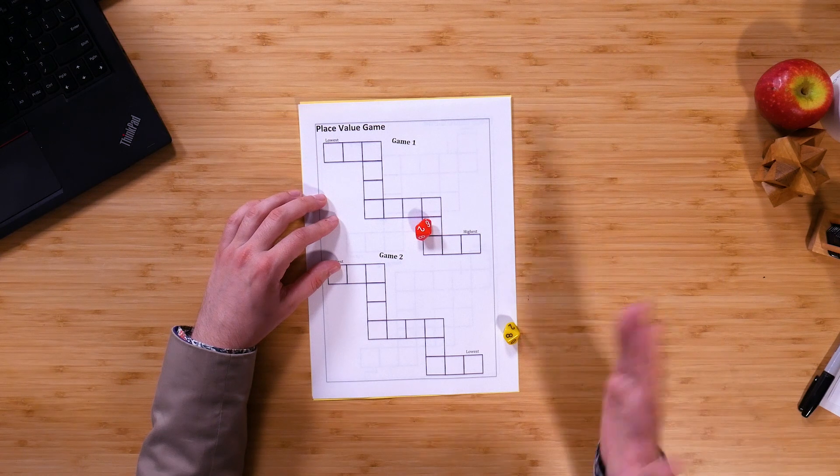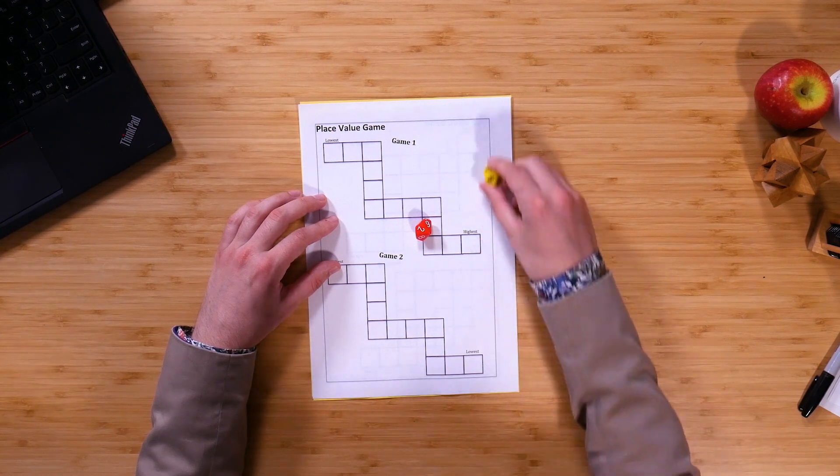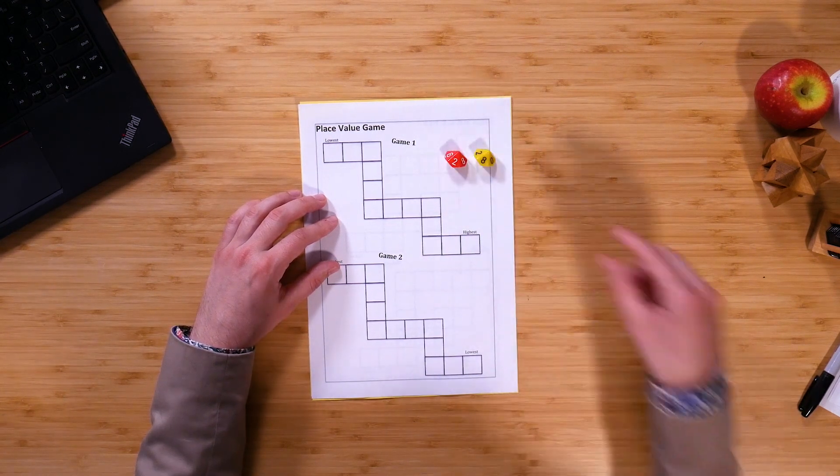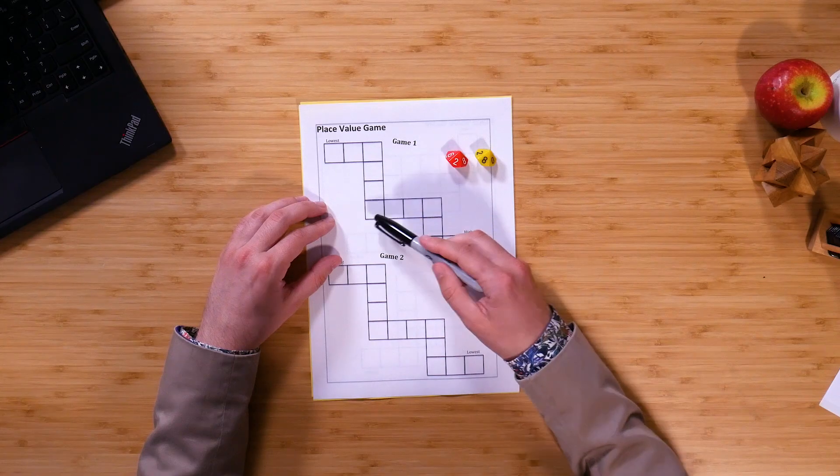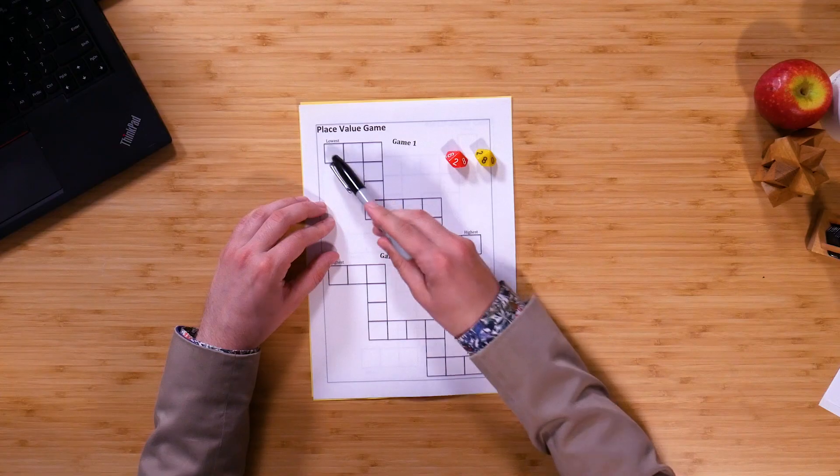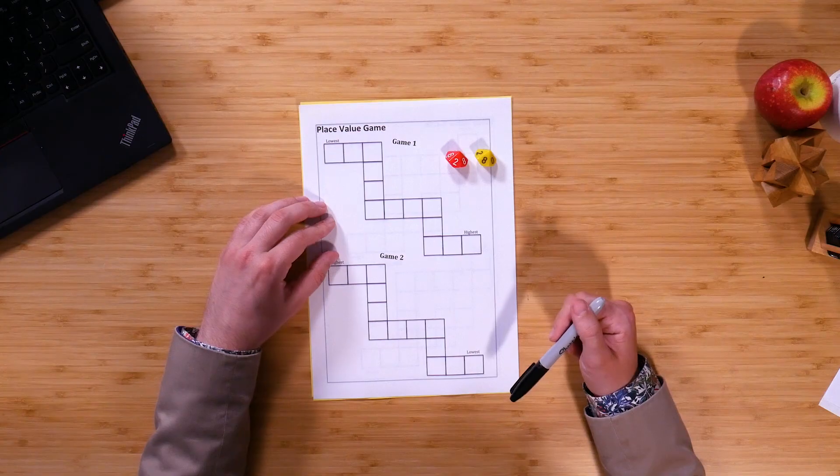The way the activity works is for the teacher or me to roll the two dice. They're both 10-sided dice, so from 0 to 9, and as you can see here I rolled an 8 and a 2. That could either be 82 or 28, and what I need to do is choose whereabouts I would like to put either 82 or 28. You can only use one of them, you can't use both, and you've got to choose which square you'd like to place that in.